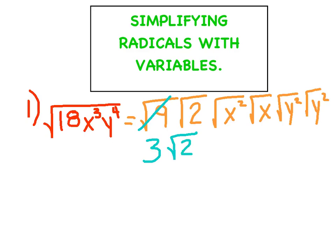The square root of x squared — the square and the square root undo each other, so that just becomes x. This one's not squared, so that's going to stay under the radical. This square and square root undo each other, so that becomes y. And the square and square root undo each other, so that also becomes y. Notice: when I take their square root, they come outside of the radical. If I don't know them, they stay inside the radical.